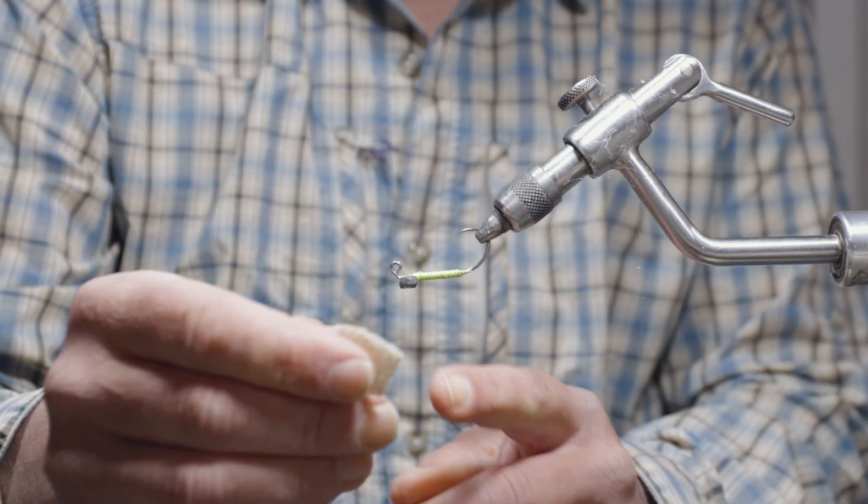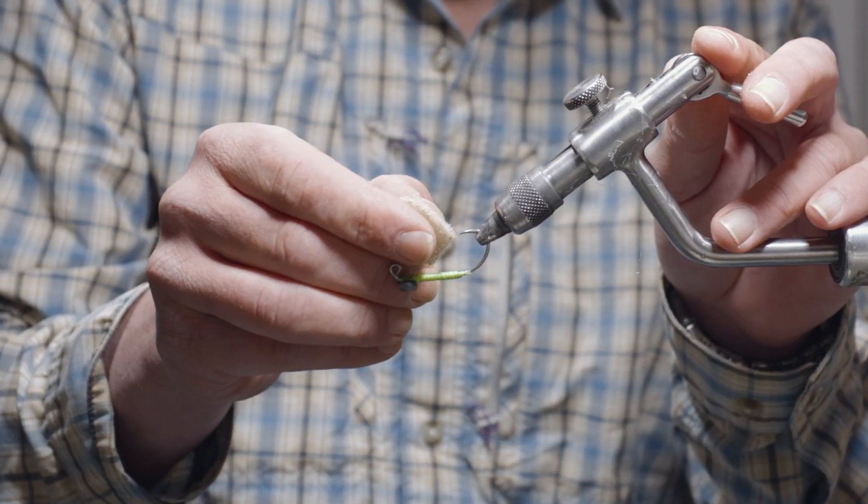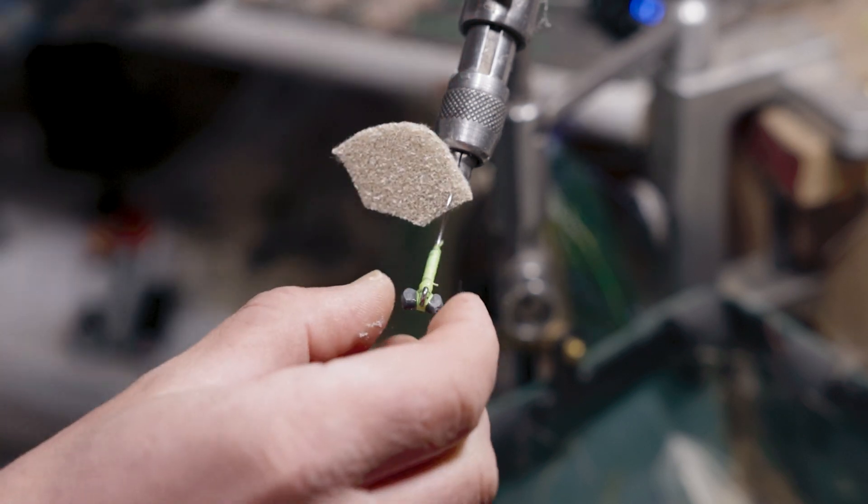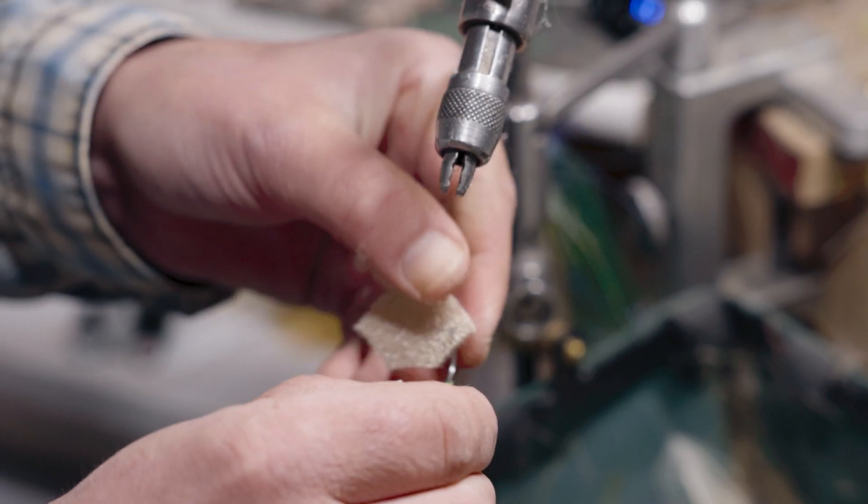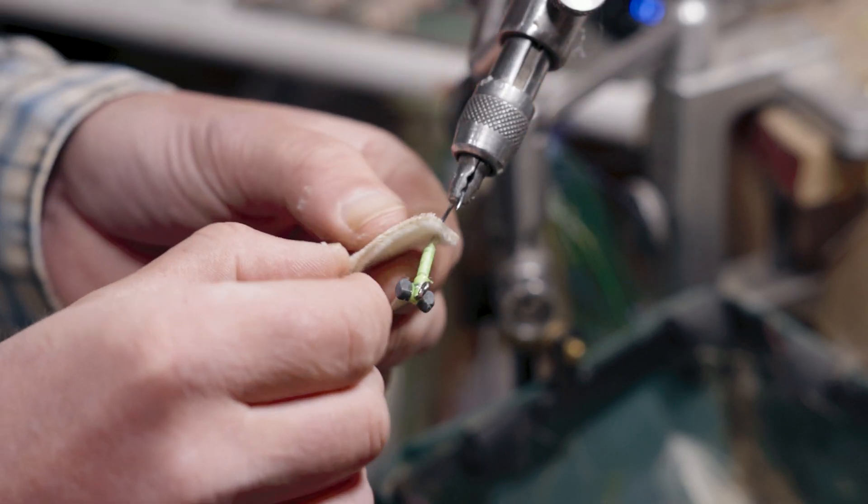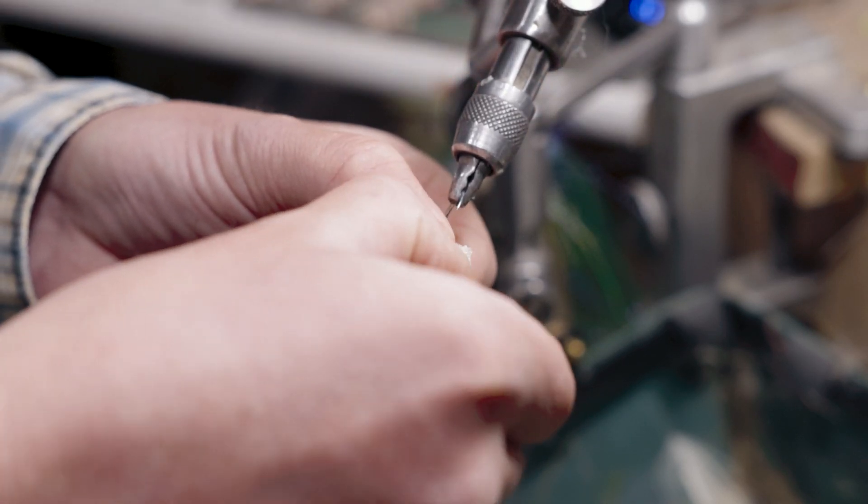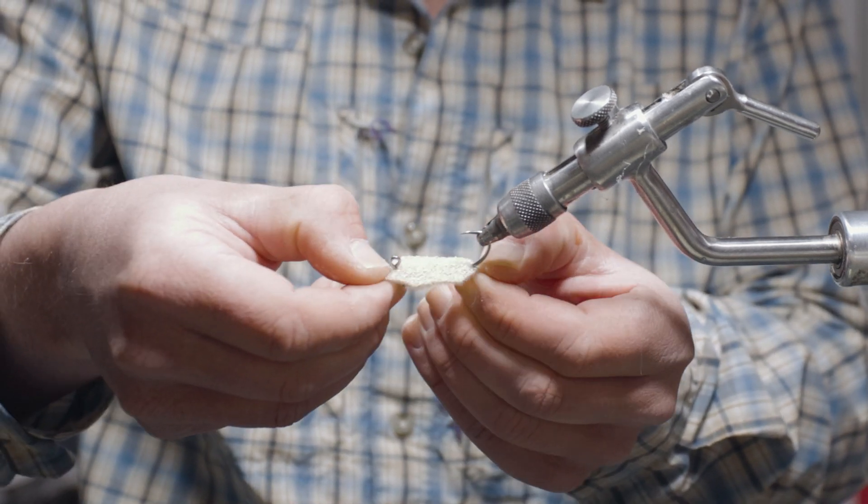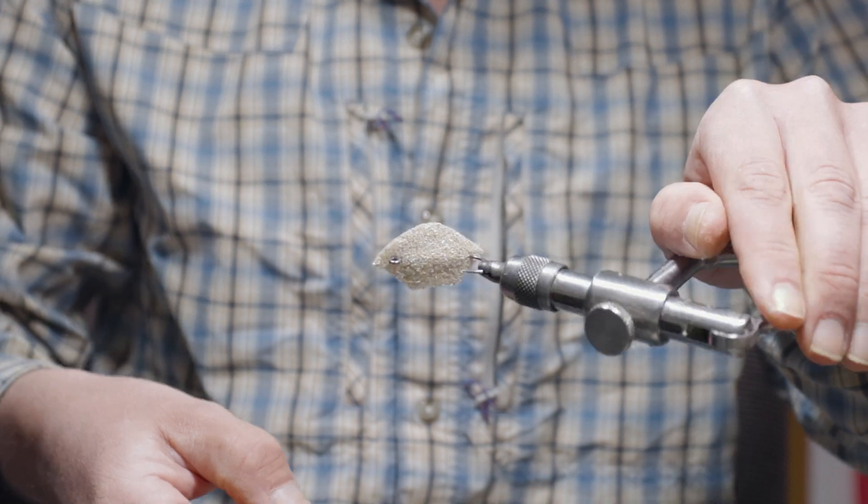Next we're going to take the corner and impale it onto the hook. Pop the hook out of the vise. And then just with my thumbnail take the other corner and just poke the eye of the hook through.